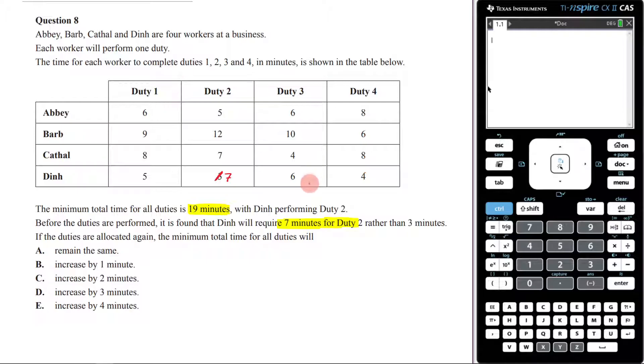So for instance, if we start at the bottom here, if Dean is no longer going to do 3, he should probably do 4, right? Because that's my next smallest. Cathal should do his smallest, which is 4.